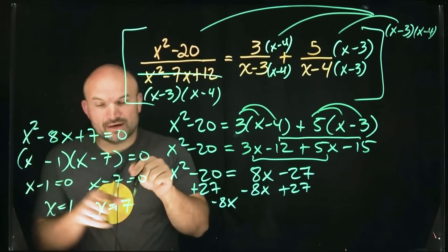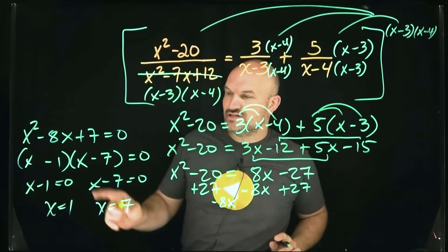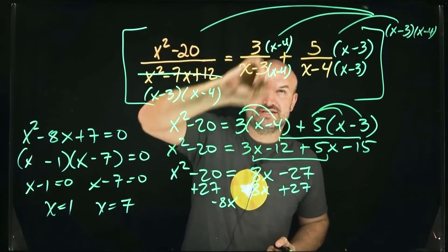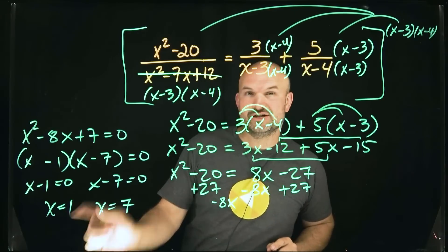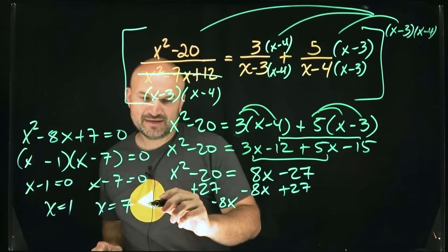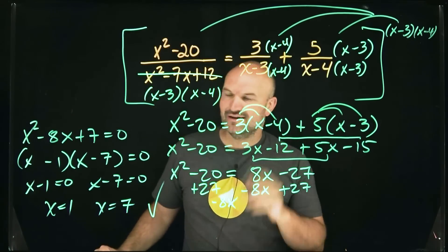But before I'm done, I want to make sure I can plug these in back into my original equation to make sure the denominator does not go to zero. Since neither of these, when plugged in, makes my denominator go to zero, neither of them are extraneous solutions. These are going to be my two solutions for this equation. Hope you enjoy.